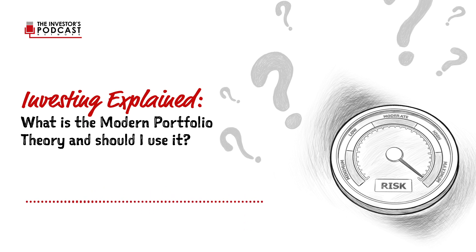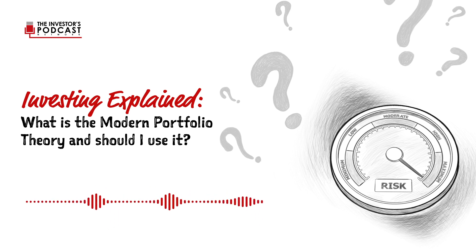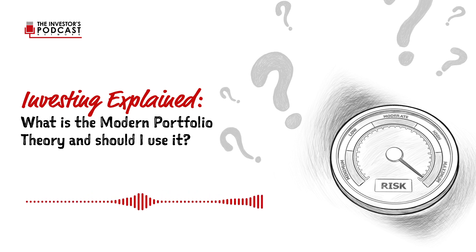To answer the second part of your question, Zach — because you might be thinking, if I'm not going to use MPT, then what should I do to diversify? If you want to diversify, you should identify and invest in uncorrelated assets. But really — and this comes from an investor who tends to be quite concentrated — more than diversification for the sake of diversification, look for investments that have very little risk. The less risk you incur, the less you need to diversify in the first place.